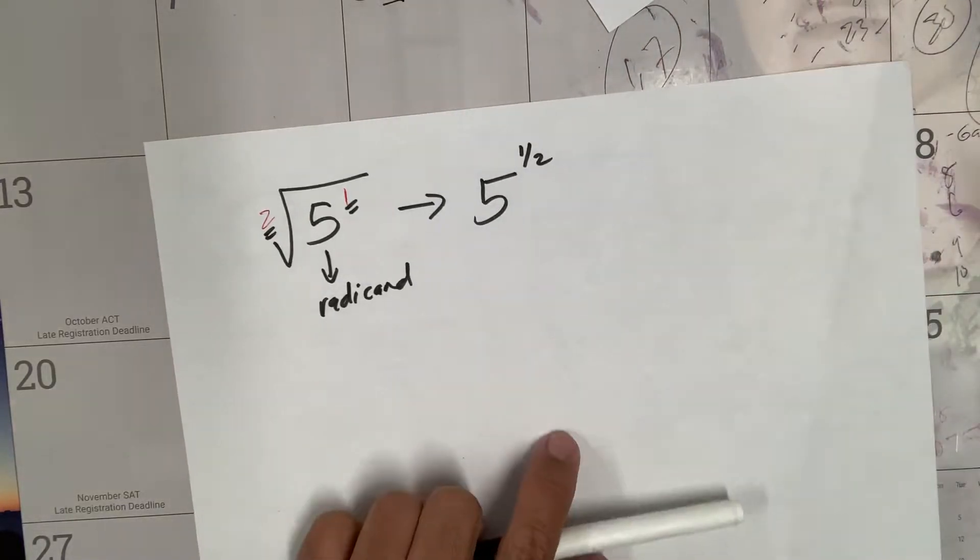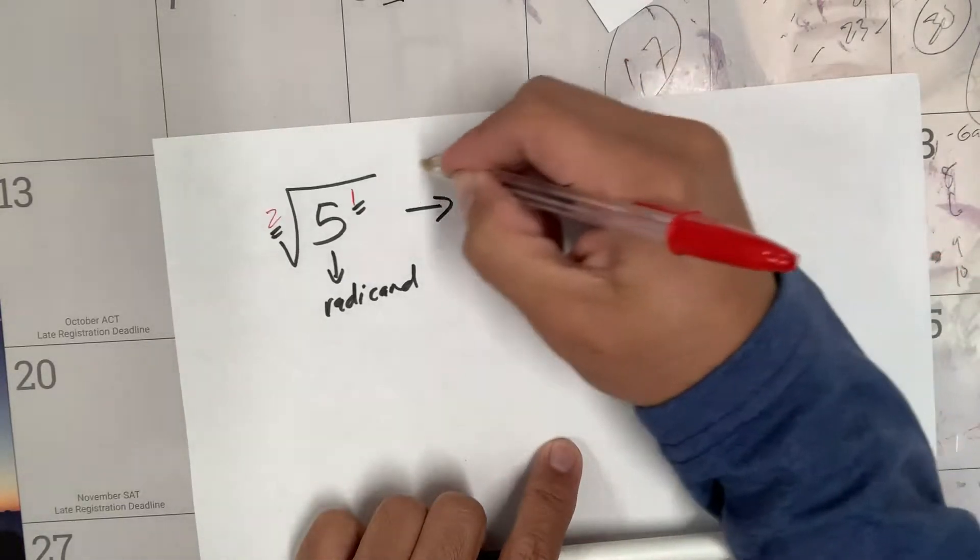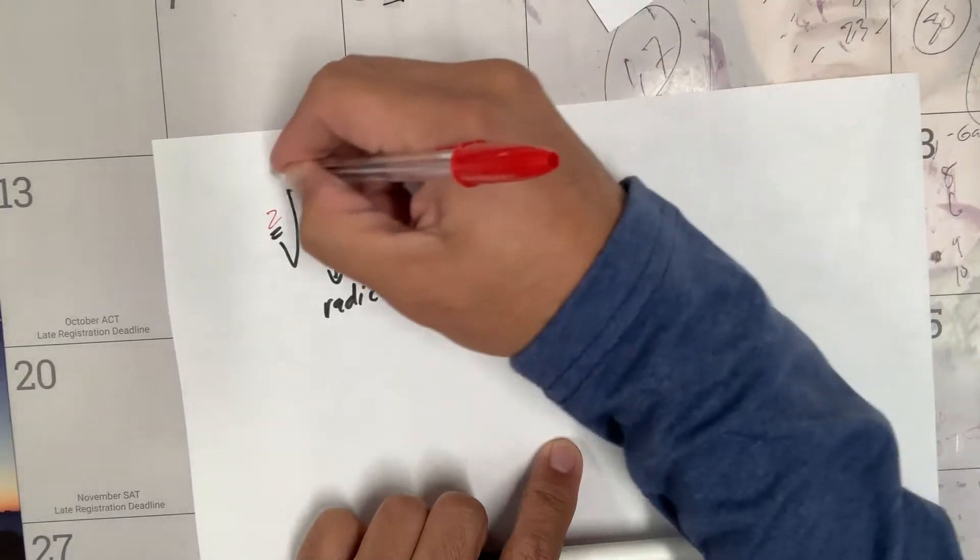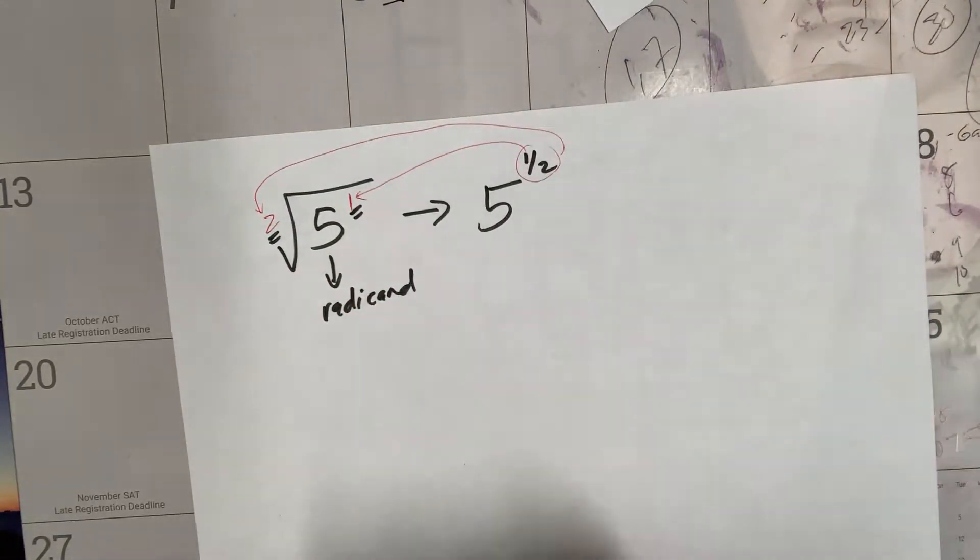Your exponent here and your root will be raised to one-half. How do you get the one-half here? One from there, two from the root. Easy, right?